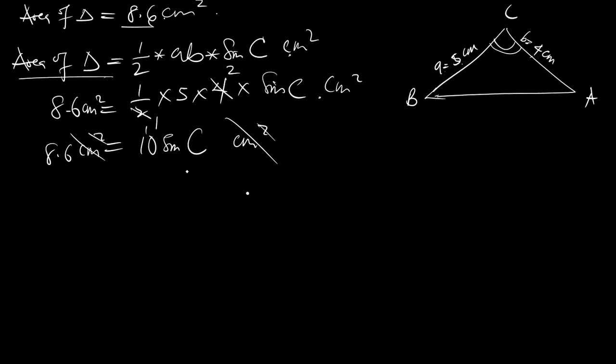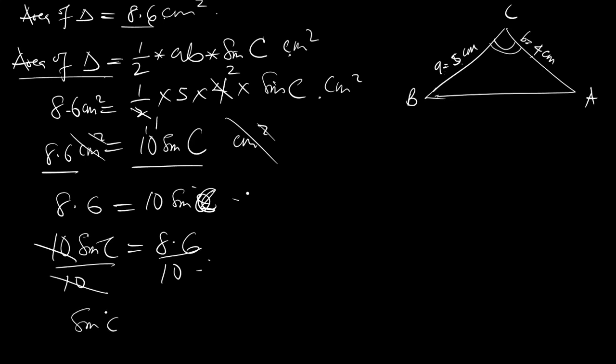We now have 8.6 equals 10 sine C. We'll divide both sides by 10. You now have sine C equals 8.6 divided by 10, which is 0.86.